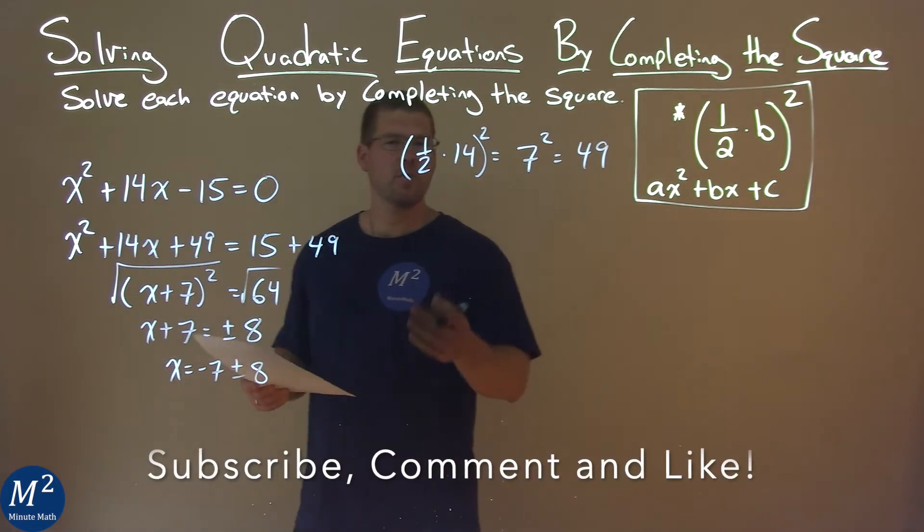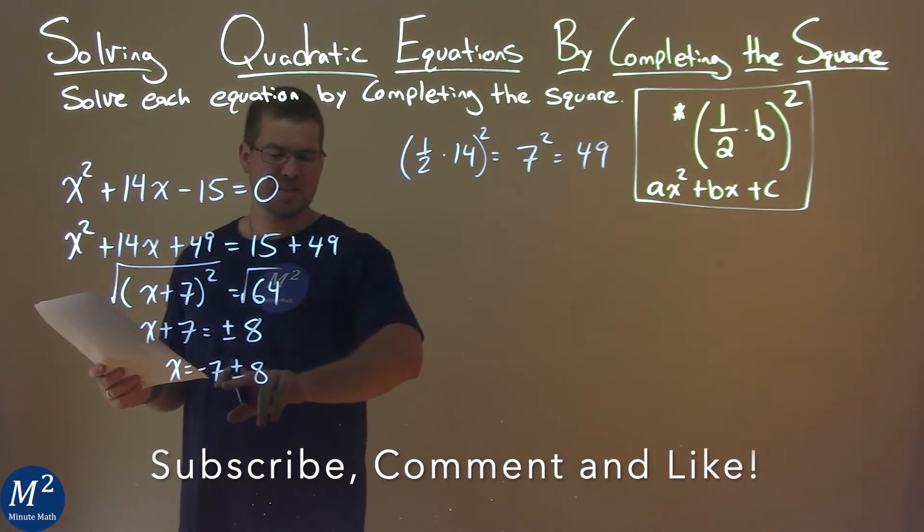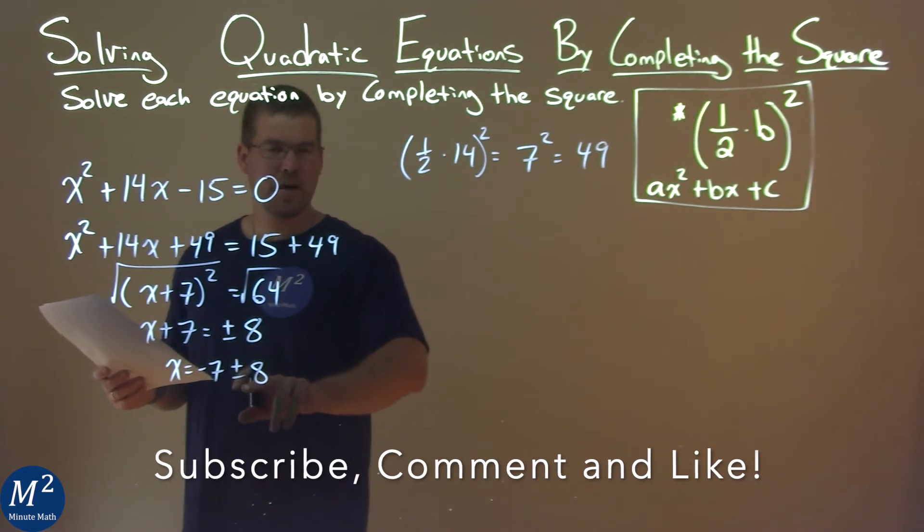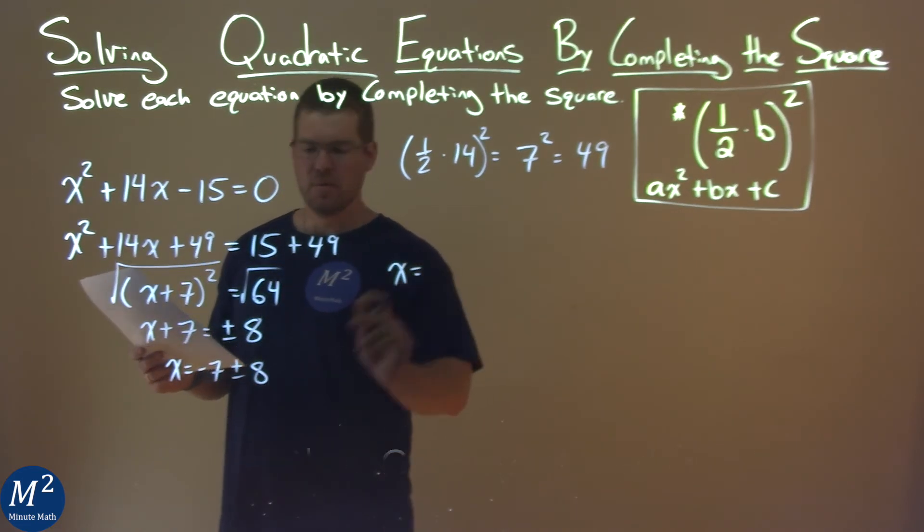So, where do we go from here? Well, we can just solve it now. We just solve the plus and the minus solution here. So, let's go with the plus: negative 7 plus 8 is a positive 1.